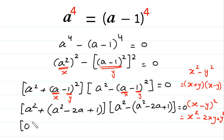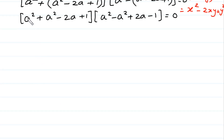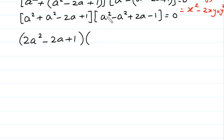For the second factor, A squared minus A minus 1 whole squared, we again expand A minus 1 whole squared as A squared minus 2A plus 1. Removing the bracket, the minus sign changes the signs: positive A squared becomes negative A squared, negative 2A becomes positive 2A, and plus 1 becomes minus 1. Combining like terms: 1 A squared plus 1 A squared is 2A squared, giving 2A squared minus 2A plus 1, times 2A minus 1, equals 0.